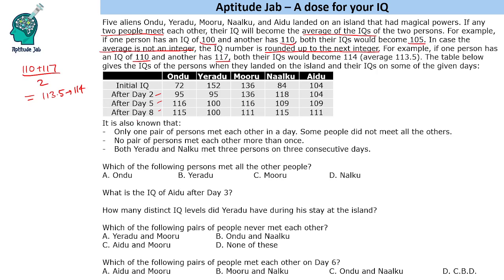Only one pair of persons met each other per day. Some people did not meet all others. No pair of persons met each other more than once — so if O and Y have met, they will not meet again. Both Yerudu and Nalku met 3 persons on 3 consecutive days. Based on this data, we have to answer the following questions.